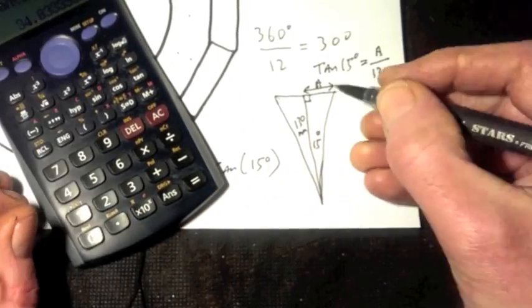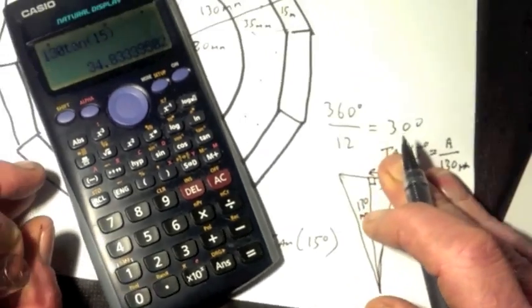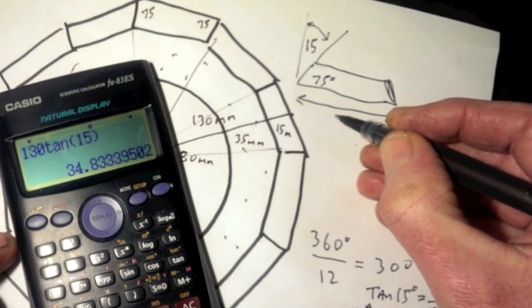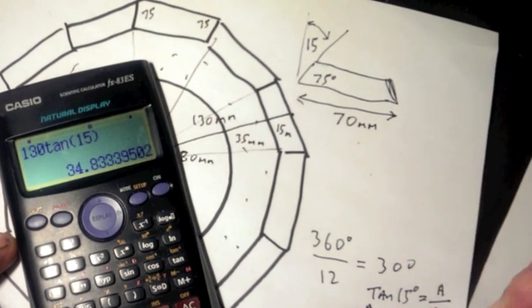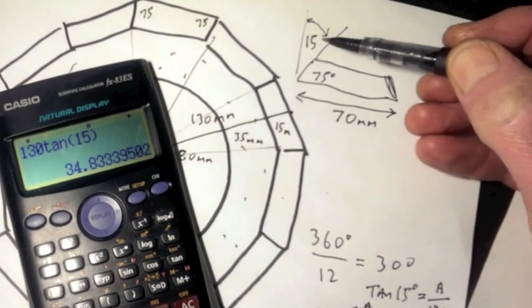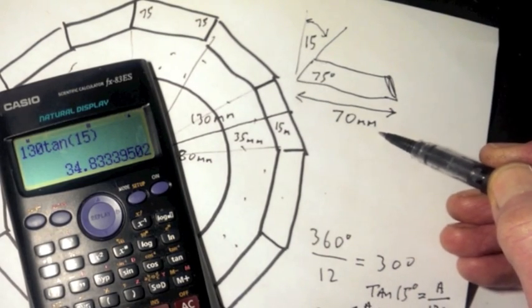Coming back to this, we know that A is 35 millimeters and A is half the length of the side. So we know the distance we want is 70 millimeters because it's twice 35. So we just need to set the table saw to 15 degrees and cut our slats 70 millimeters wide.